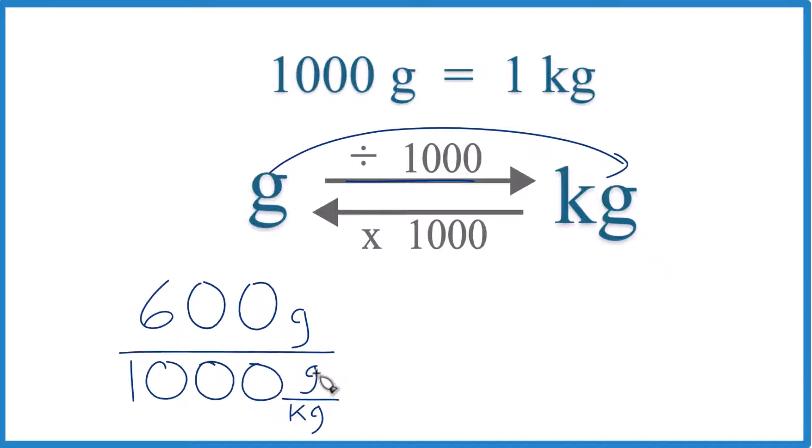And remember, it's 1,000 grams in a kilogram, 1 kilogram. That's the conversion factor. Grams on the top and the bottom, they cancel out.